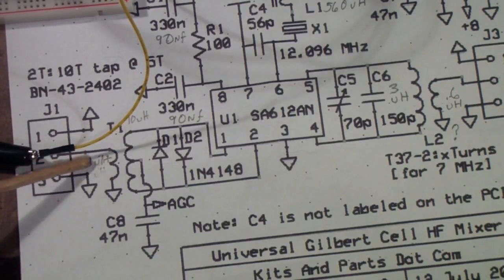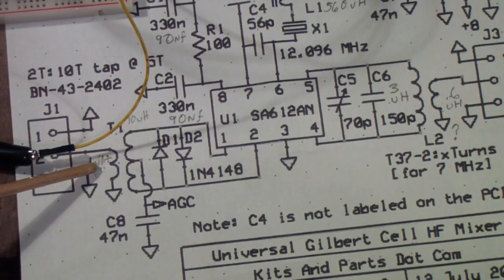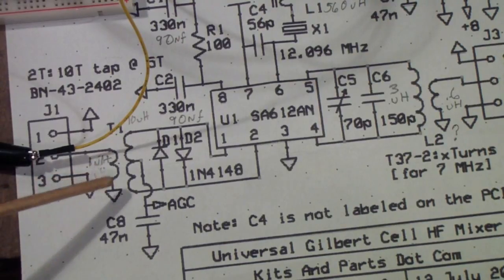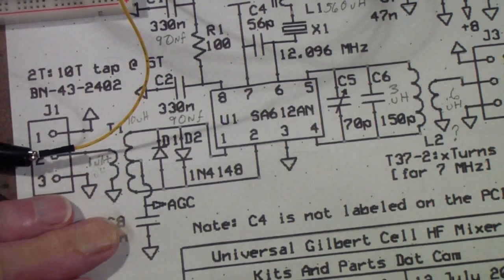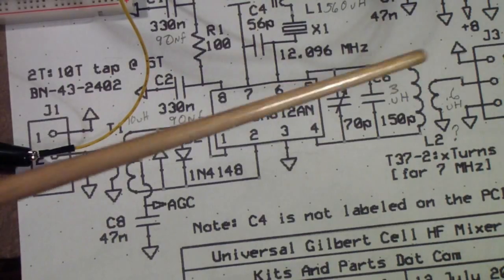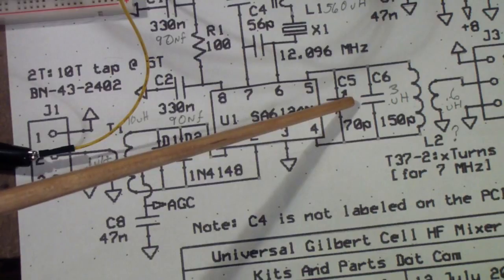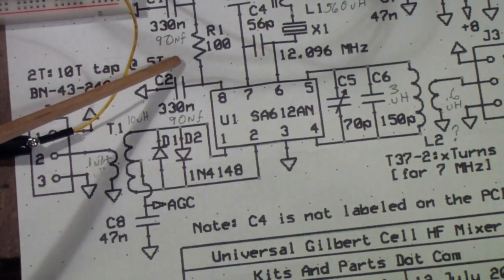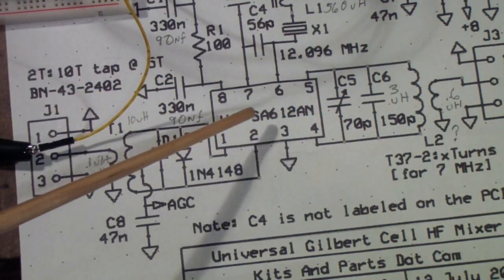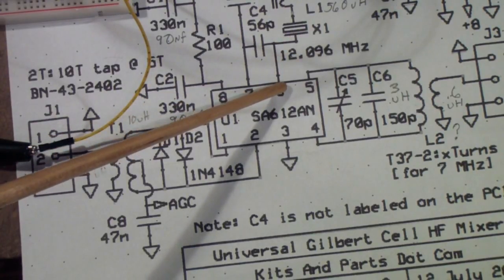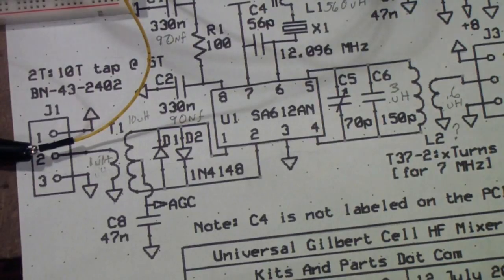Over here I'm applying a 7 megahertz signal that I can AM modulate and I'll turn the modulation on and off. And then on the output over here, this is tuned to 5 megahertz. There's a 12 megahertz signal being applied to this point for the local oscillator. So let's take a look on the spectrum analyzer at what that results in.